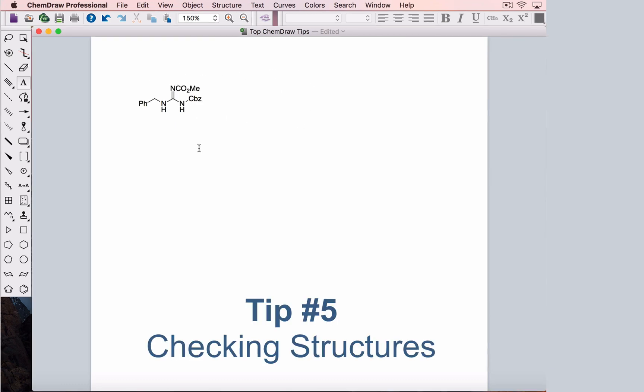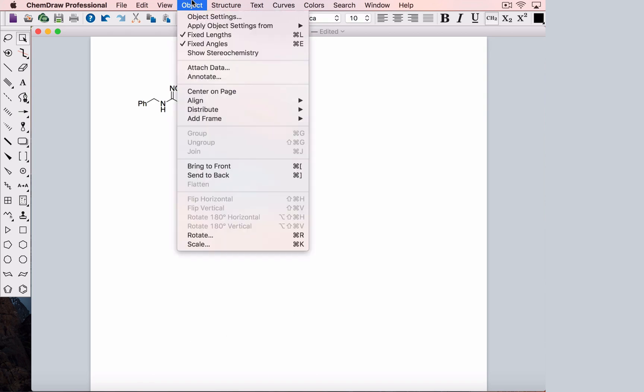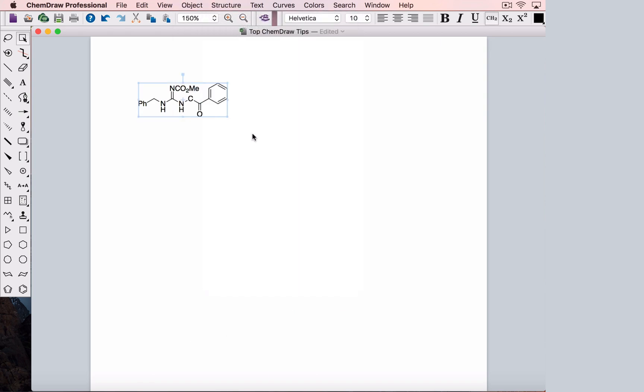Let's go back to our structure with the CBZ group abbreviated. Imagine that you misremembered how the abbreviation was written and you capitalized the B. Now when we expand the label, ChemDraw thinks this is a carbon bound to a benzoyl group and our structure contains an error.